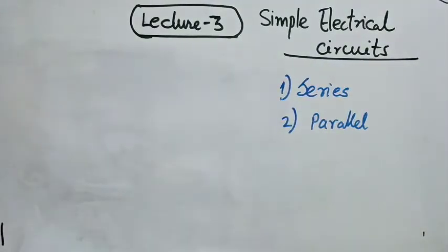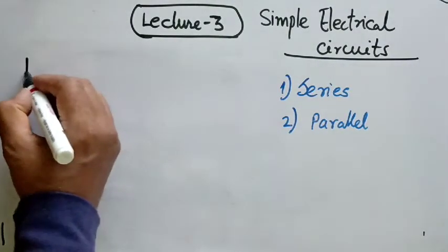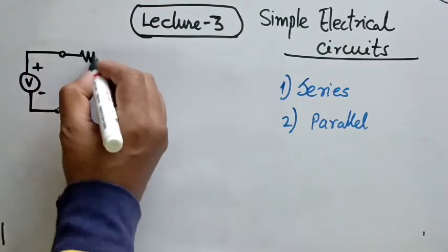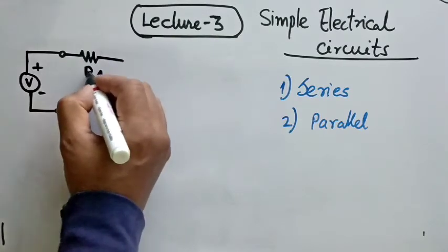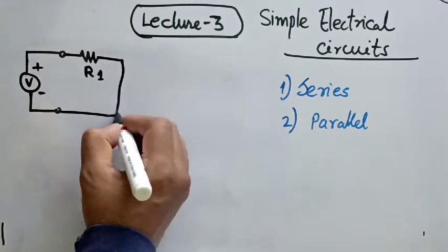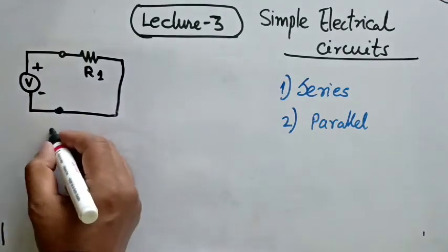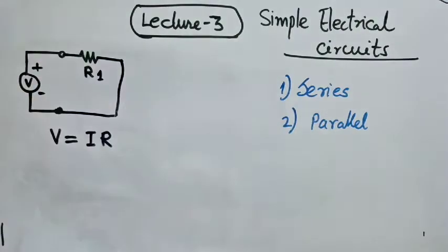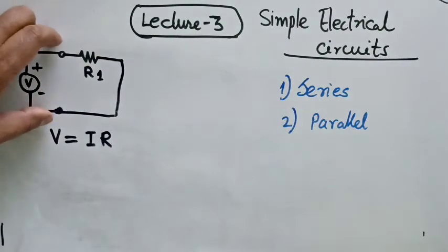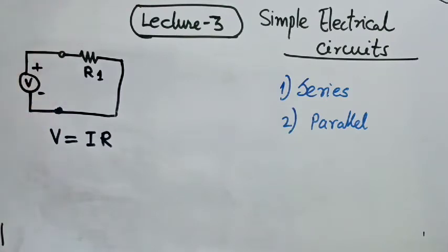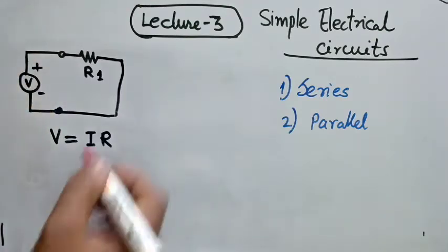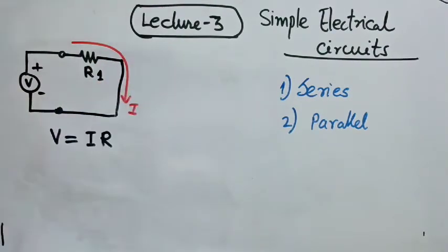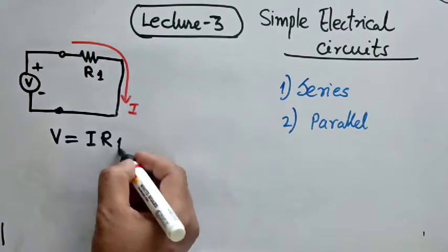Assuming we draw one voltage source V with plus and minus, and we connect a resistance R1 between the two terminals. As per Ohm's law, V equals IR, which basically means the voltage across these two terminal points, or the potential difference, is a factor of the current that flows through this line I multiplied by the resistance R, in this case R1.